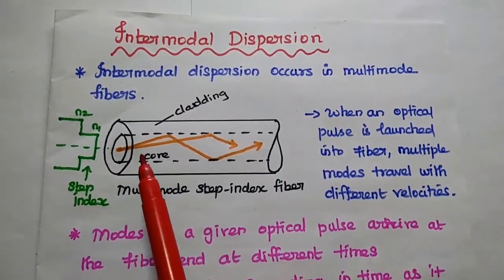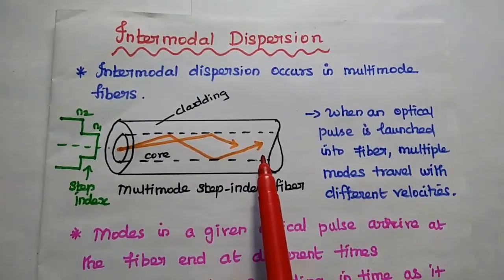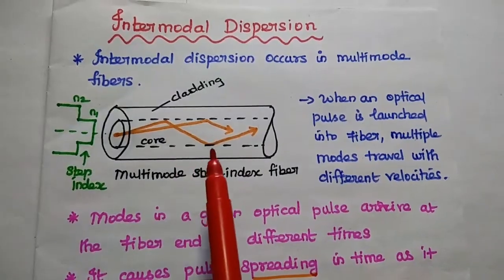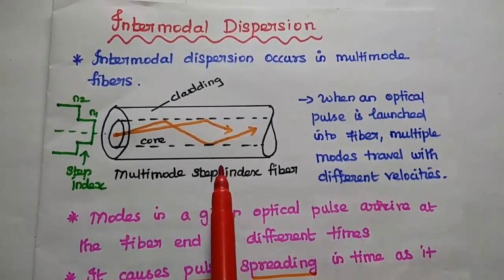So in this one, multiple modes travel with different velocities. So what will happen at the receiving end? These modes arrive at the receiving end at different times.